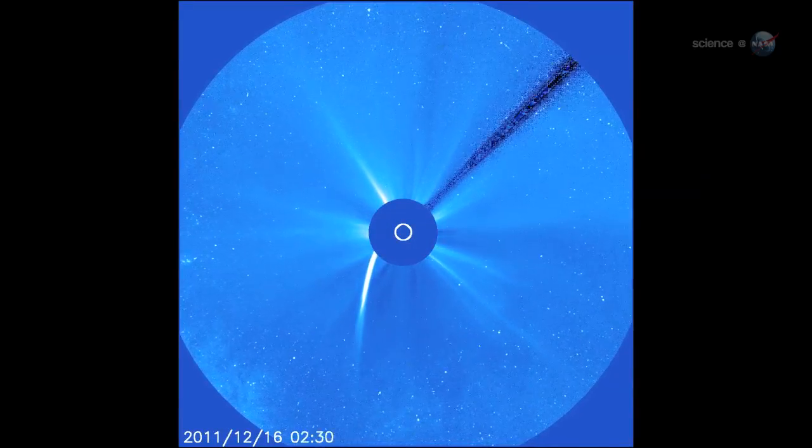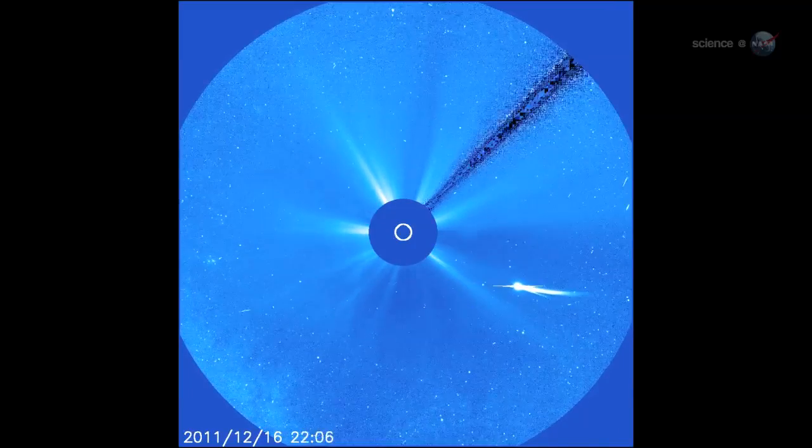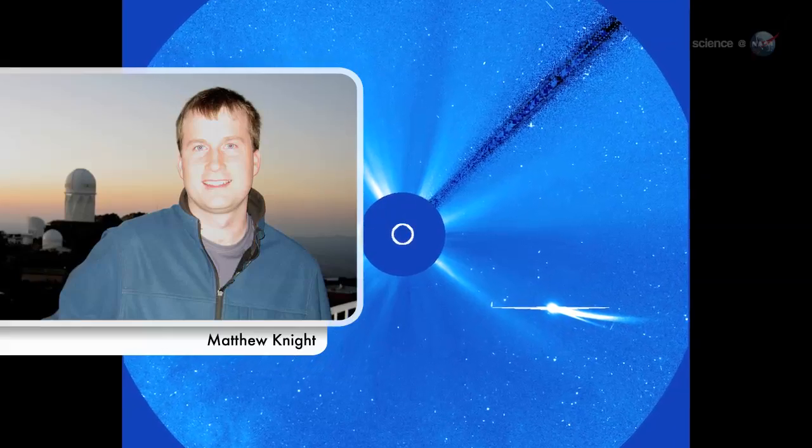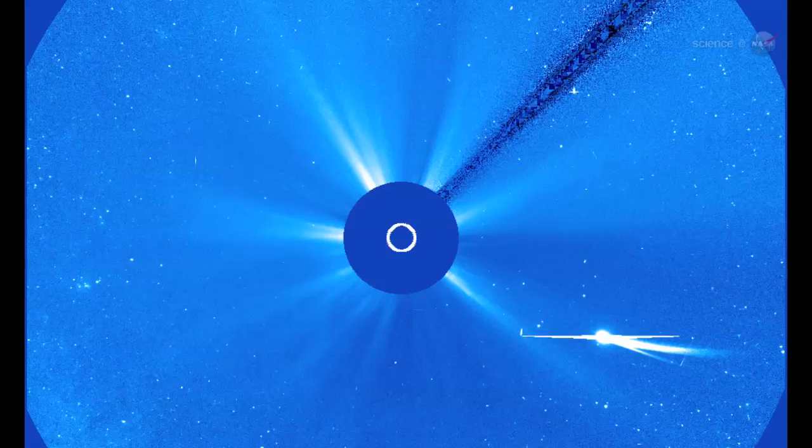Within hours, the tail grew back, bigger and brighter than before. It's fair to say we were dumbfounded, says Matthew Knight of the Lowell Observatory and the Johns Hopkins Applied Physics Lab. Comet Lovejoy must have been much bigger and tougher than we thought.